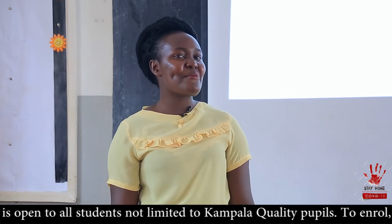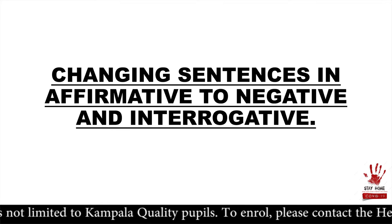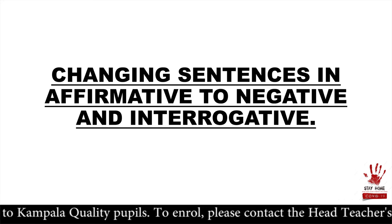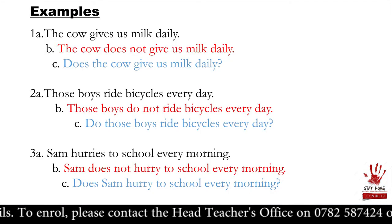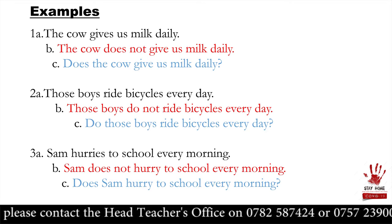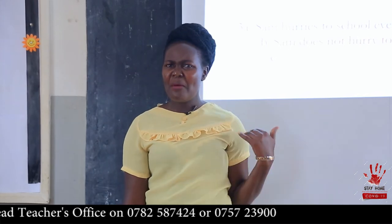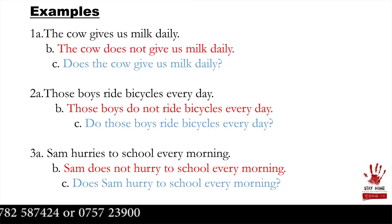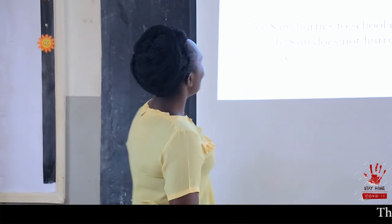Now that we've established that interrogative sentences are questioning sentences ending with a question mark, let's proceed. We are going to change sentences from affirmative to negative and lastly interrogative — three sentences. The first example reads: 'The cow gives us milk daily.' What form is that? Positive — it agrees. 'The cow gives us milk daily' — it is the truth.